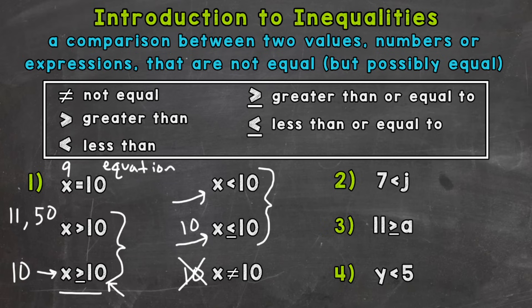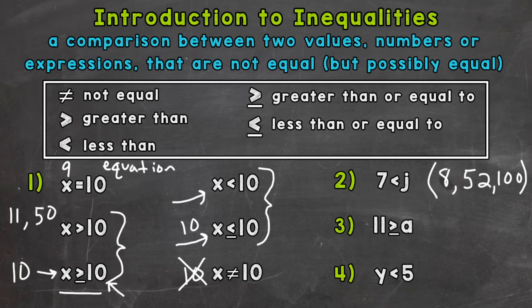So let's jump over to numbers 2, 3, and 4 and come up with some correct solutions to those inequalities. For number 2, we have 7 is less than j — so any value greater than 7 would work there, because j has to be greater than 7. So we could do 8, 52, or 100. Again, an infinite amount of solutions. Now 7 is not included because that is just a less than sign, not an or equal to.